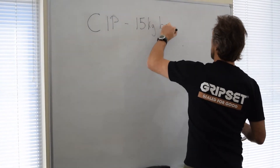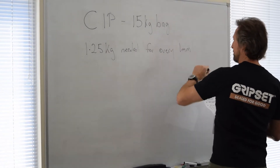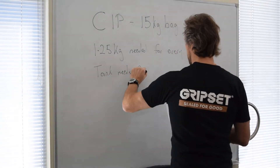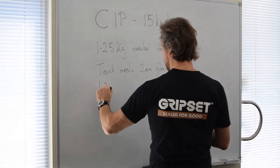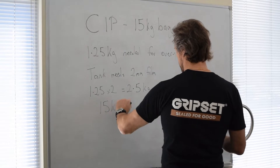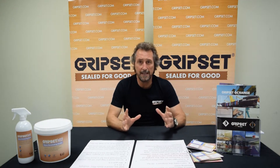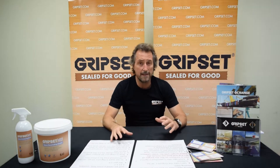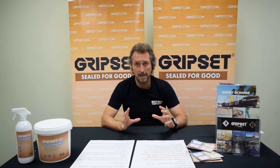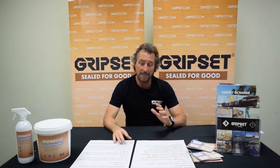For a water tank application — and C1P is often used for those sorts of applications — our specification requires a 2mm film. Our data sheet states that for every 1mm of film thickness you need 1.25kg of powder. So 1.25 times 2 means I need 2.5kg per square meter to get that project done. A 15kg bag divided by 2.5 gives me 6 square meters per bag. For 100 square meters of tank area, I divide 100 by 6, giving me 16.6 bags — round that up to 17 bags. That's how you work it.